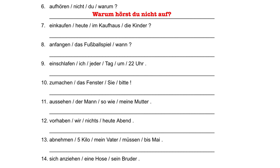In number seven, we have the verb einkaufen. We conjugate kaufen and put ein at the end of the sentence. The subject is die Kinder — the children — so we use the plural form kaufen. Kaufen die Kinder heute im Kaufhaus ein? — Are the children shopping today in the department store?